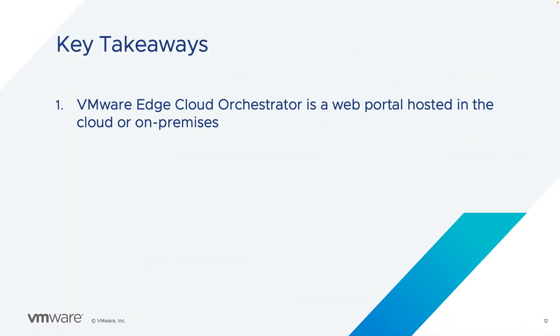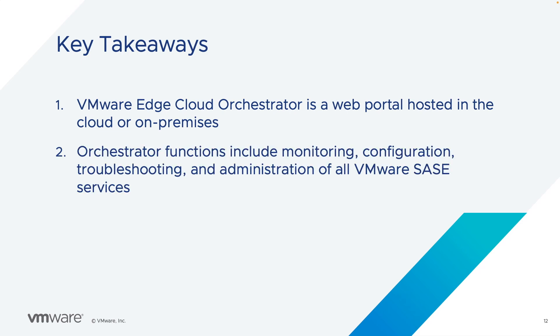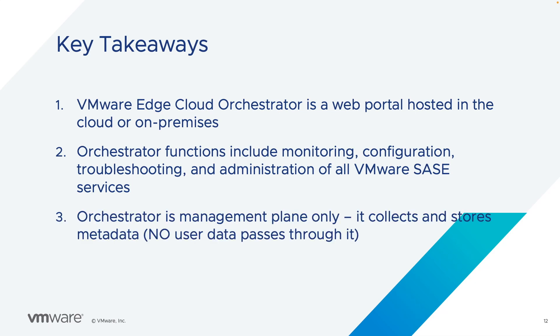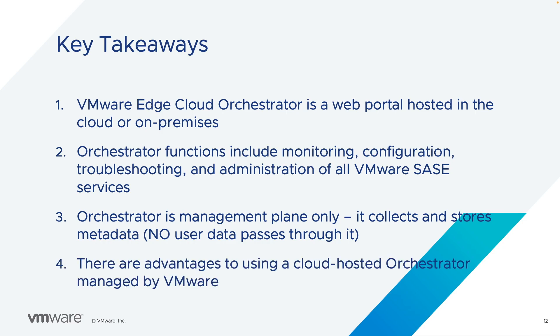The key takeaways for this video include knowing that VMware Edge Cloud Orchestrator is a web portal hosted in the cloud or available as an on-premise management solution. Orchestrator's primary functions include monitoring, configuration, troubleshooting, and administration of all VMware SASE services. Orchestrator is purely management plane — it only collects and stores network and application metadata, meaning no user data is stored or passes through the system. There are significant advantages to using the cloud-hosted Orchestrator managed by VMware.